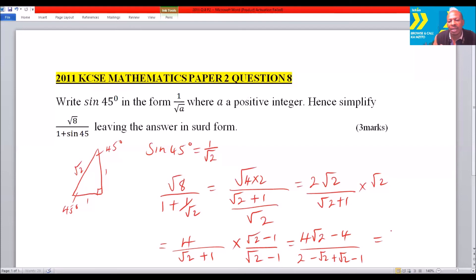So when you divide by 1, it doesn't change. And therefore, that is the answer that is expected in the simplest form and in surd form. So that's how you do that question.